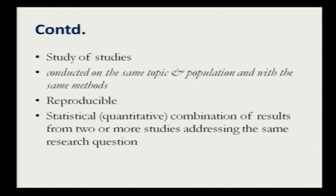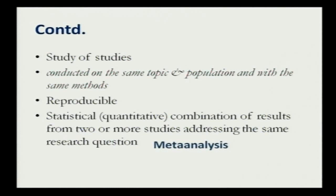If possible, you can statistically combine the results of two or more studies addressing the same research question — this is called meta-analysis. Meta-analysis may be a component of the systematic review when it is possible to combine results. The commonly used phrase in meta-analysis is: you always combine apples with apples and oranges with oranges — whatever you are combining should be comparable and similar.